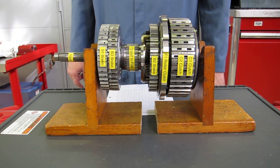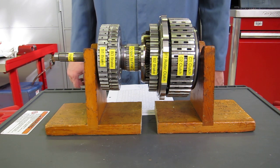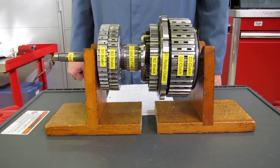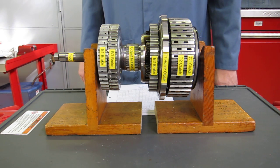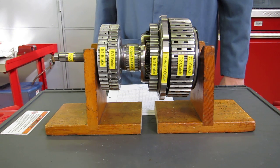This is a demonstration of the power flow through the planetary gear sets of a Toyota U660e automatic transaxle. This transaxle is found in 2007 and later Toyota Camrys and Lexus ES350s with the V6 engine.